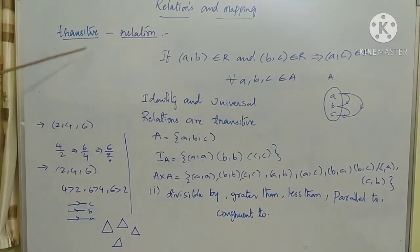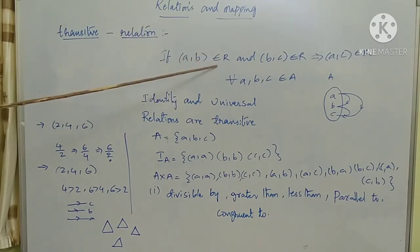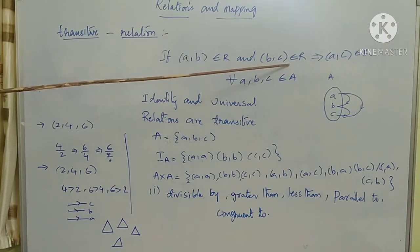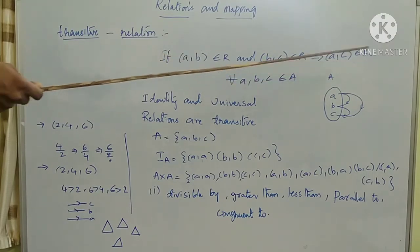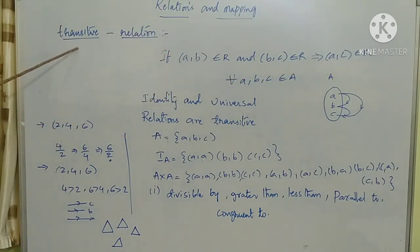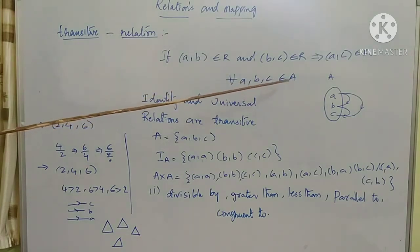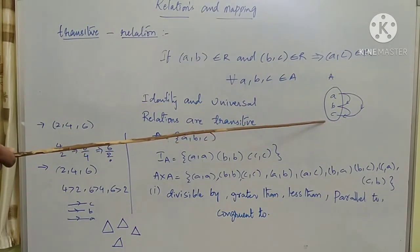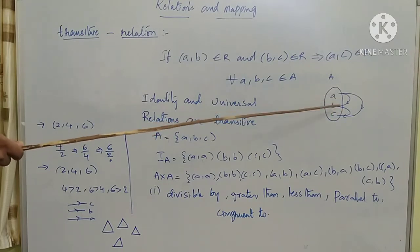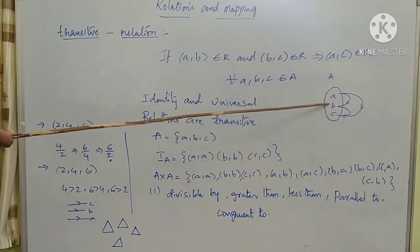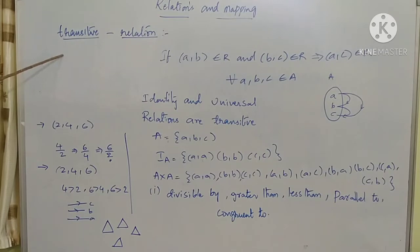The next relation is the transitive relation. In this relation, if the ordered pair (A, B) belongs to relation R, and (B, C) also belongs to R, then (A, C) also belongs to R. This type of relation is called transitive, for every element A, B, C belonging to A. As shown in the arrow diagram, if A belongs to B and B belongs to C, then A also belongs to C.